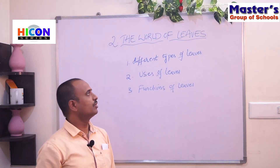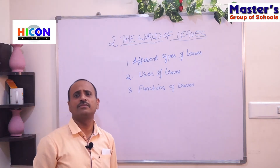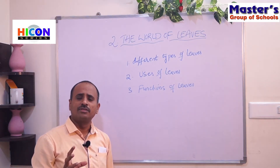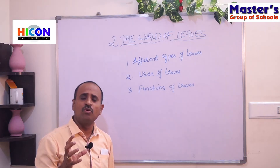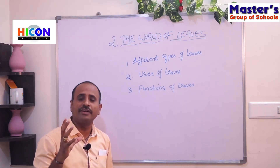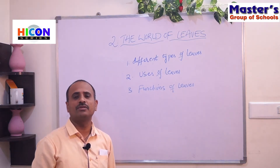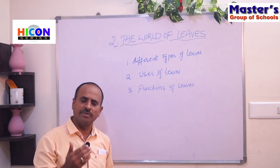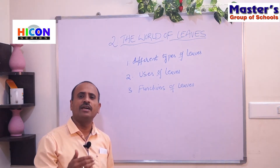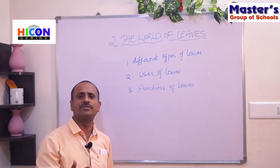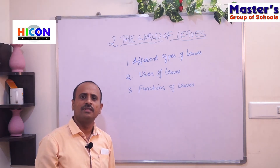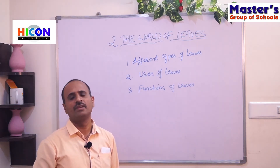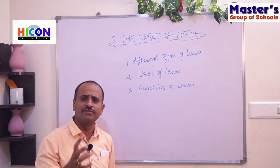So what is a leaf, children? The leaf is the most important part of the plant. The plant has so many parts like roots, stem, branches, fruits, flowers, and leaves — and among all these parts, the leaf is the most important part of the plant.